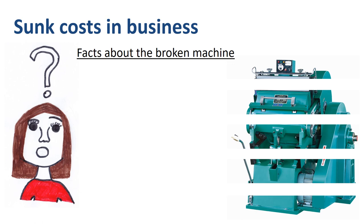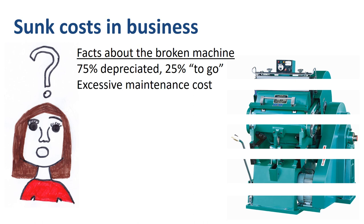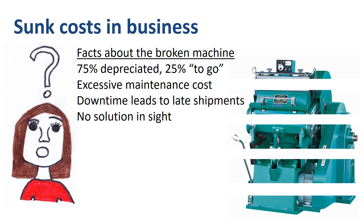She gathers some facts about the broken machine. The machine is already 75% depreciated, with 25% of the original book value still to go. Due to frequent breakdowns, the machine has had excessive maintenance costs versus other production equipment. The downtime has led to late shipments to customers and customer complaints. There is no permanent solution in sight to fix the erratic performance of the machine.